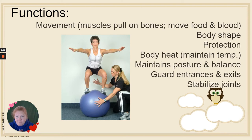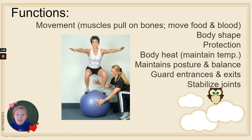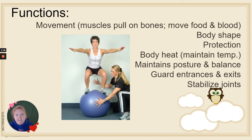Muscles give us some body shape — otherwise we'd just be skin on top of bones. Muscles also give protection as another layer. Muscles maintain our body temperature. When we are cold, we shiver, and that produces heat. The action of muscles produces body heat.